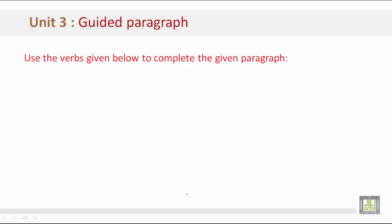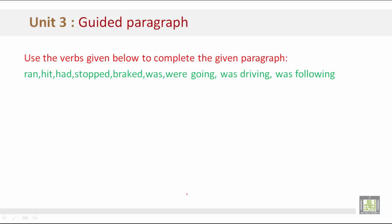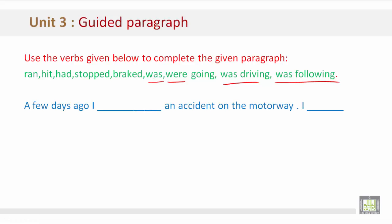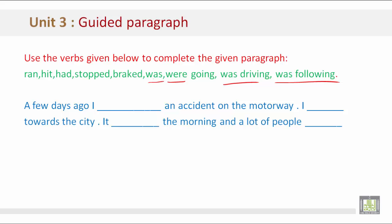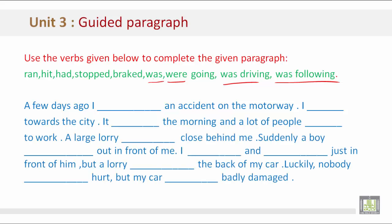Now, use the verbs given below to complete the paragraph: ran, hit, had, stopped, braked, was, were, going, was driving, was following. The incomplete paragraph reads: 'A few days ago, I [blank] an accident on the motorway. I [blank] towards the city. It [blank] the morning and a lot of people [blank] to work. A large lorry [blank] close behind me. Suddenly, a boy [blank] out in front of me. I [blank] and [blank] just in front of him, but a lorry [blank] the back of my car. Luckily, nobody [blank] hurt, but my car [blank] badly damaged.'